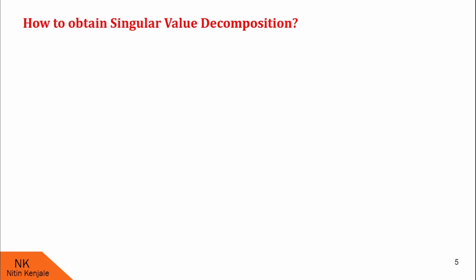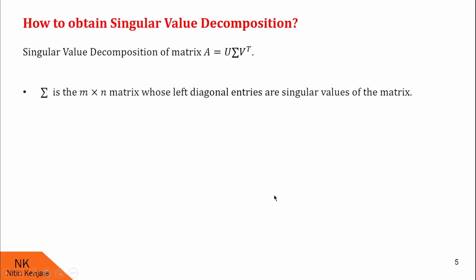Let us proceed to the next point: how to obtain singular value decomposition. We know SVD of A is given by U into sigma into V transpose. Now let us see first how to find out matrix sigma. Sigma is the M cross N matrix whose leading diagonal entries are the singular values of matrix A. Note that the order of sigma is the same as the order of A. Now let us understand what these singular values are.